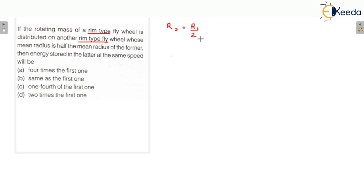The energy stored in the latter at the same speed — we know that delta E is equal to I omega squared times Cs. Cs is the coefficient of fluctuations of speed, which is constant. Since the question states the same speed, omega is also constant.